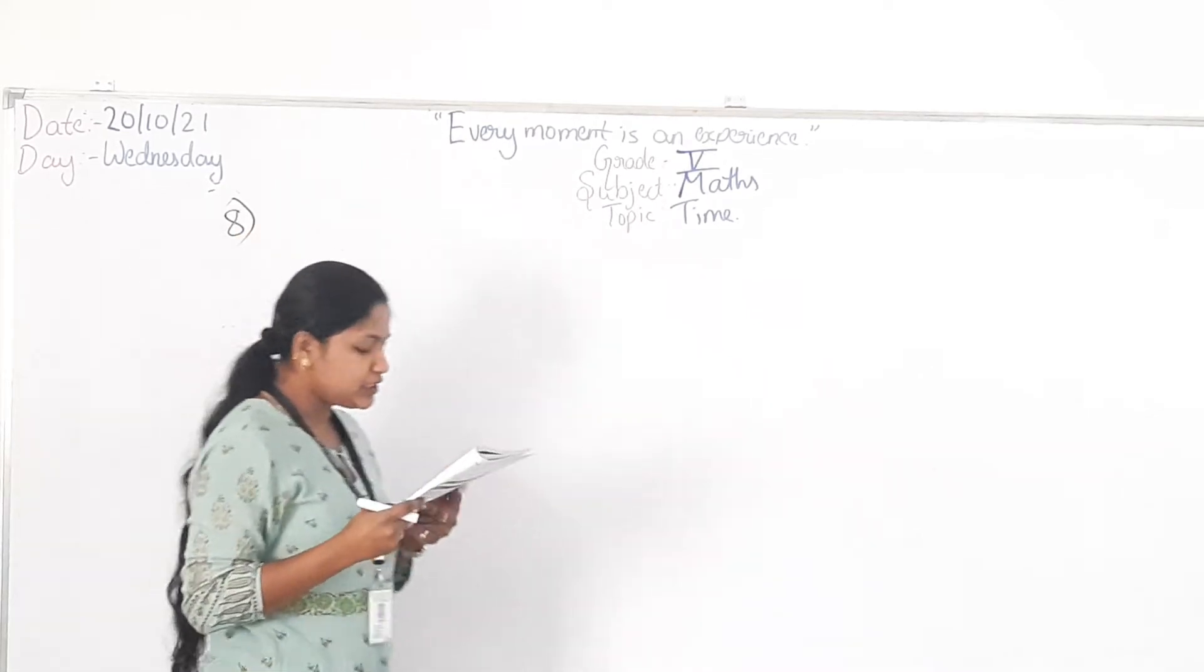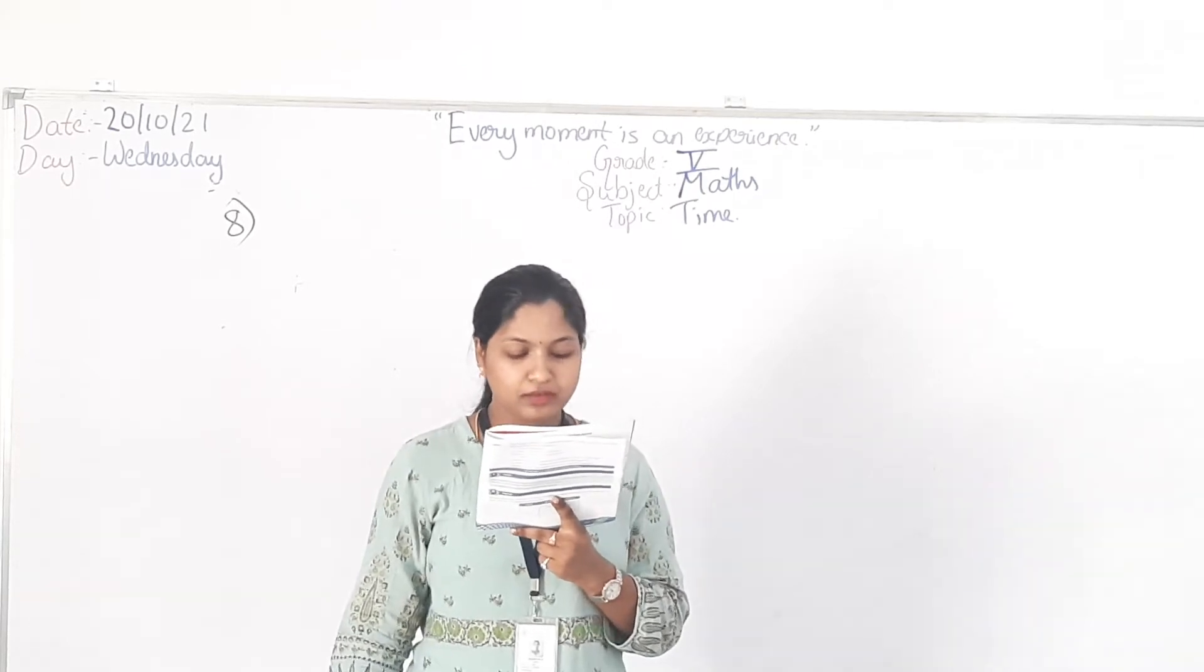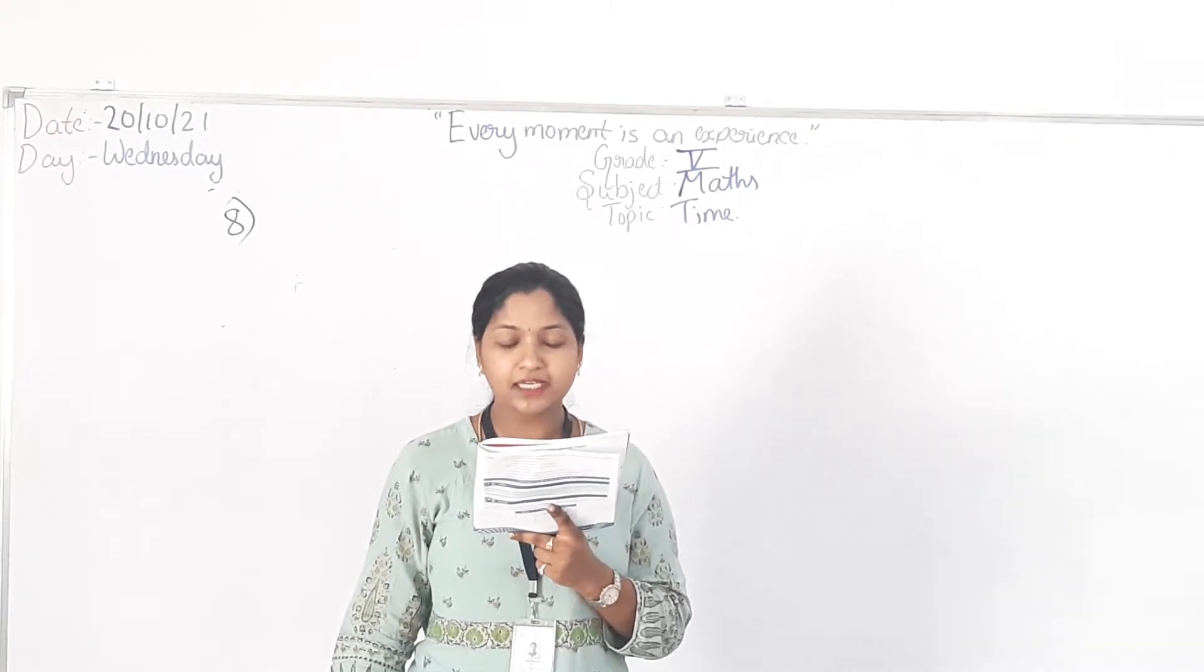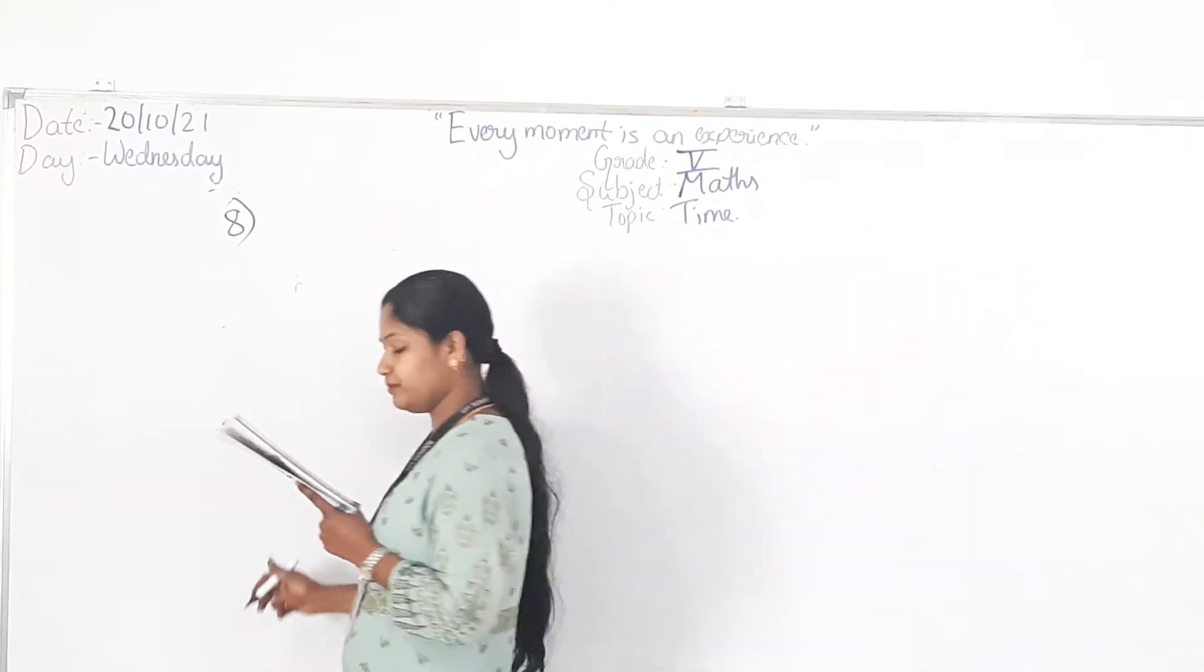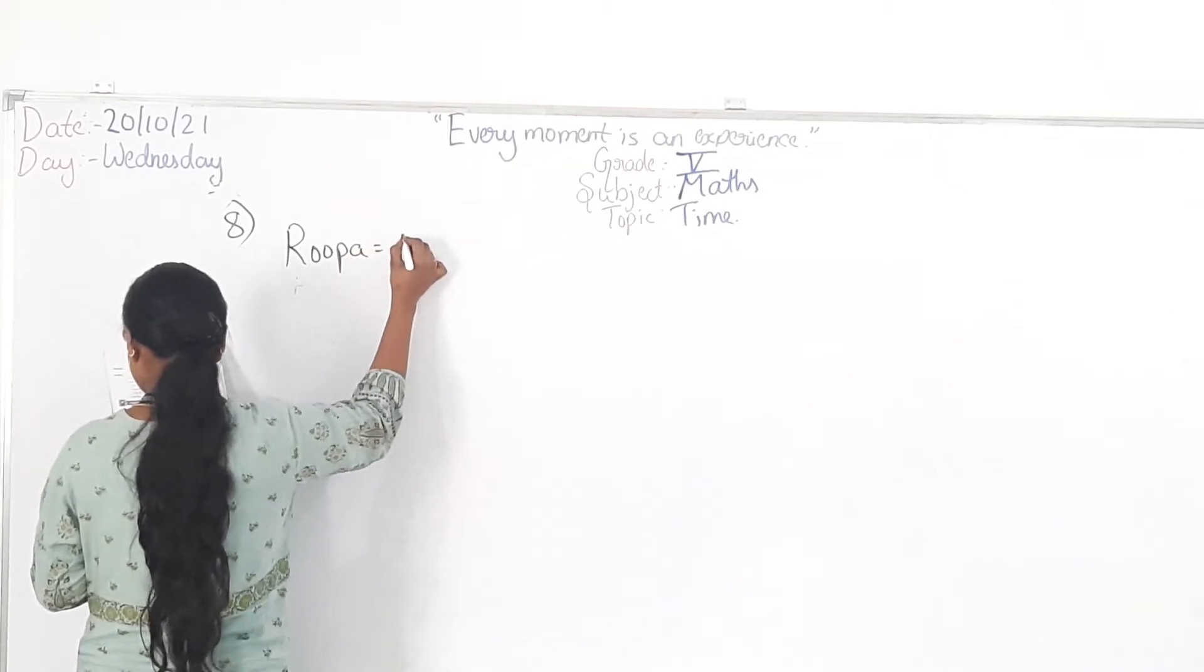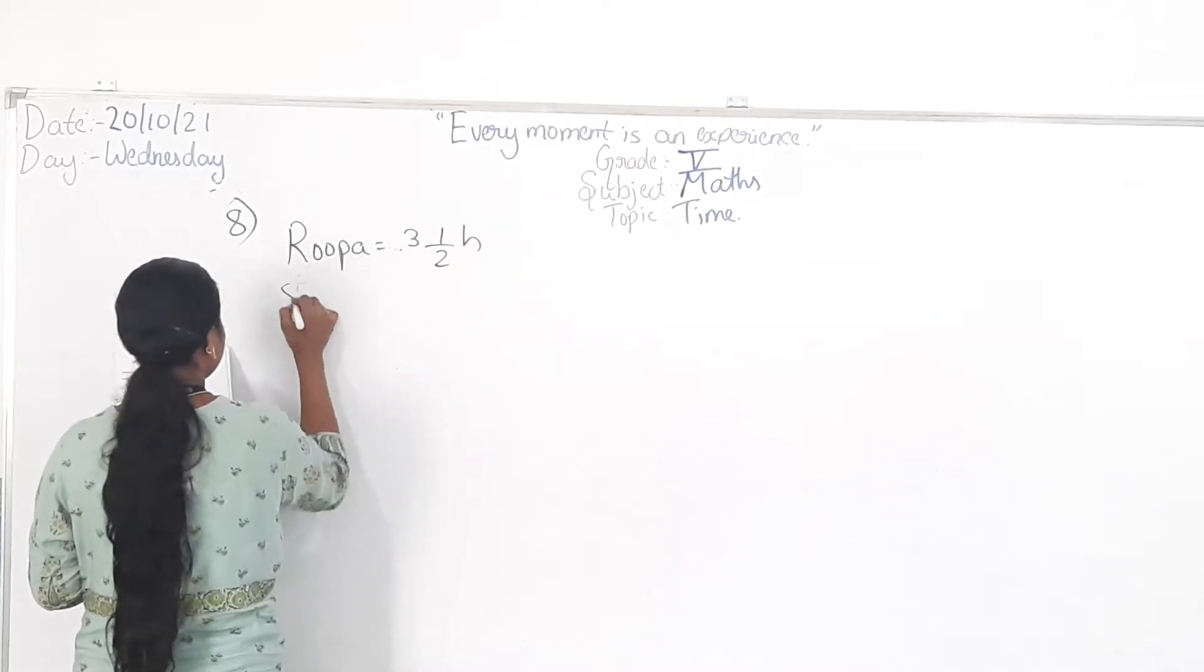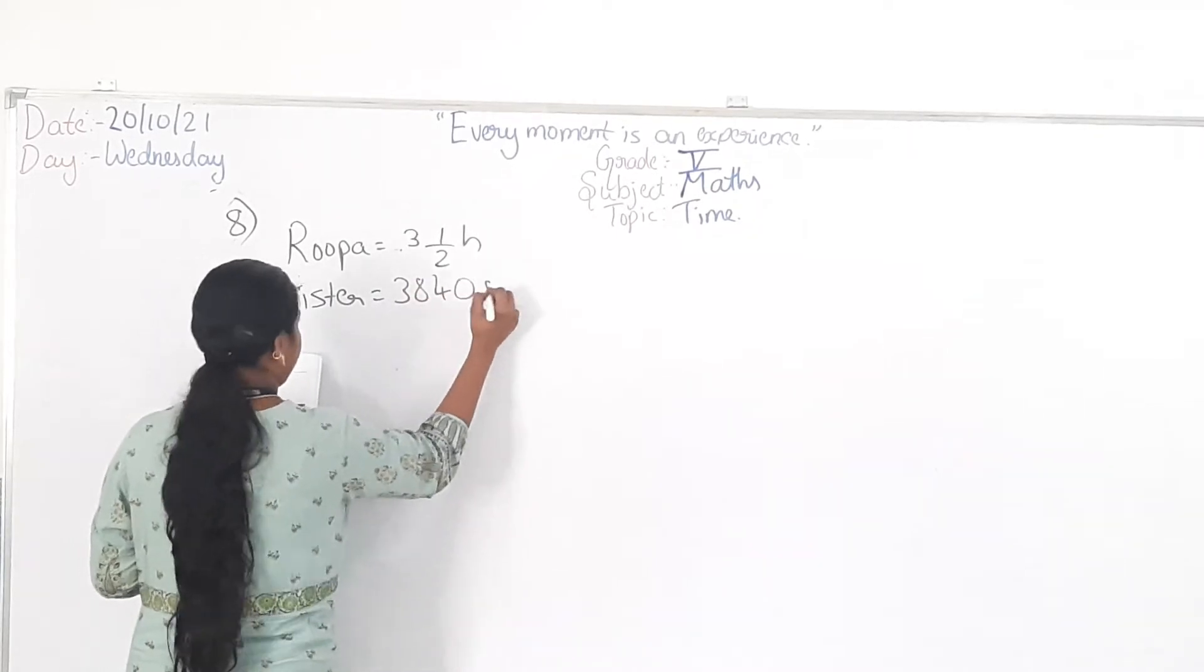Rupa travels for 3 and a half hours each day while her sister travels for 3840 seconds. Who travels for a longer duration? So 3 and a half hours. Her sister travels for 3840 seconds.